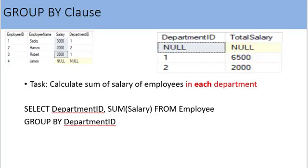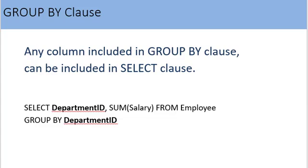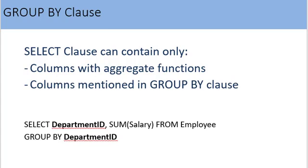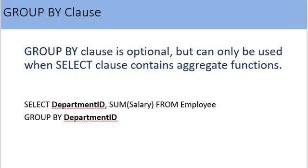The output relation contains 3 rows, one for each department. Please note: any column included in the GROUP BY clause can also be included in the SELECT clause. So department_id is in GROUP BY and also in SELECT. In other words, you cannot include a non-aggregate column in the SELECT clause unless it is mentioned in the GROUP BY clause. GROUP BY is optional and can only be used when one or more aggregate functions are used in the SELECT statement.